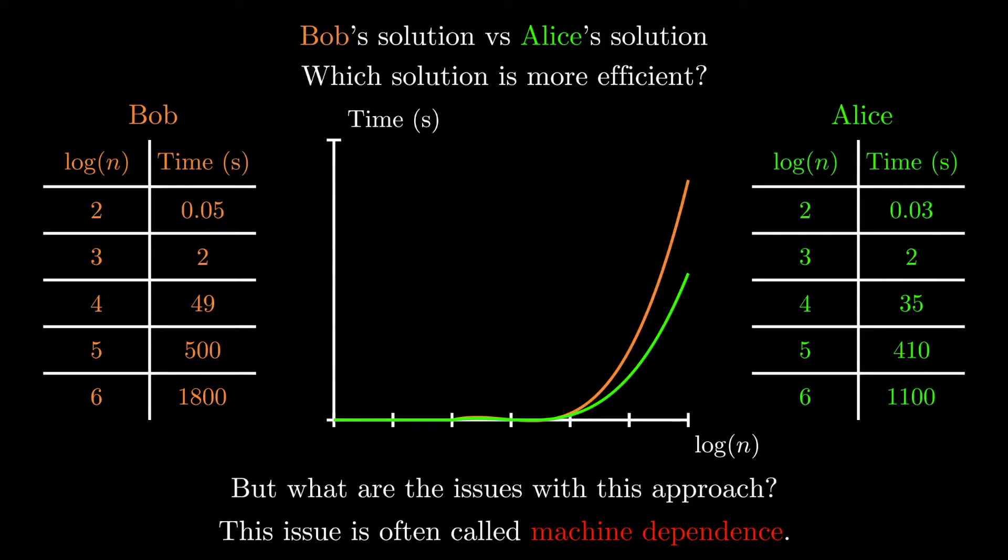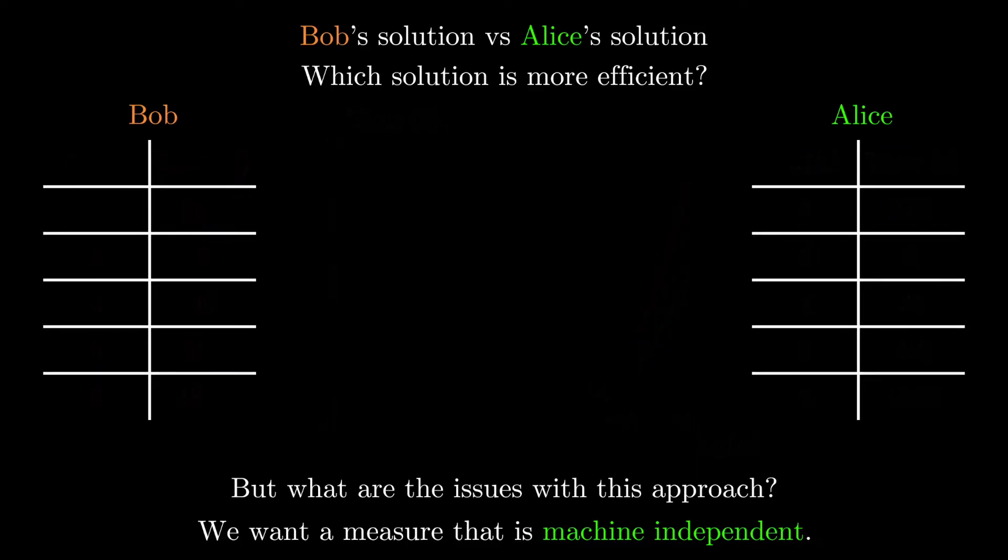A true and pure efficiency measurement should be machine independent. When someone asks you how fast an algorithm is, you don't want to give them a measurement that might only be true for your computer. You want to give them a sense for how fast it is regardless of what machine it runs on. So let's go back to the drawing board and see if we can come up with something that's more machine independent.